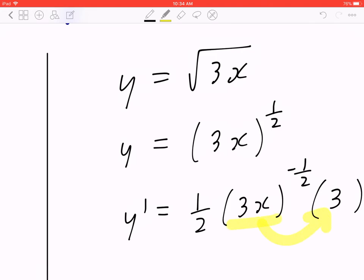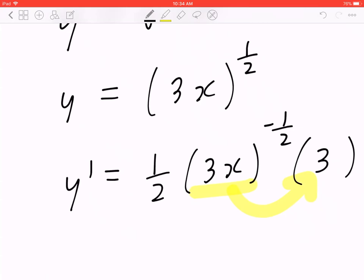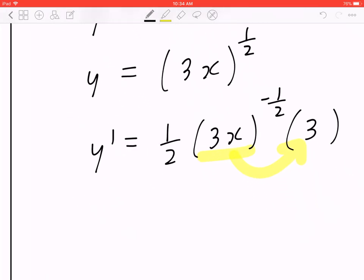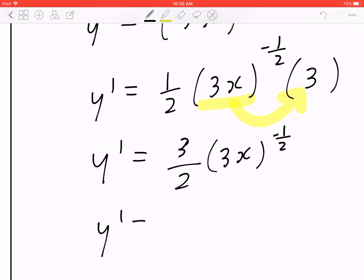So again, don't forget the internal derivative, which is the chain rule. Now when you rewrite this, y prime equals 3 over 2 times 3x to the power of negative half. If you bring this to the bottom, y prime equals 3 divided by 2 times the square root of 3x.